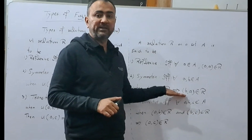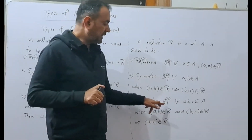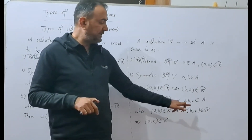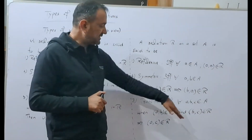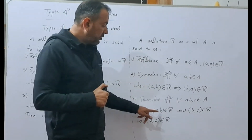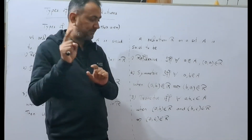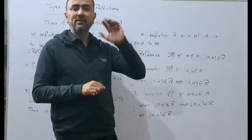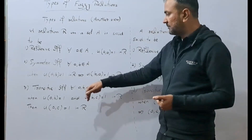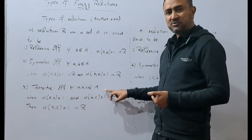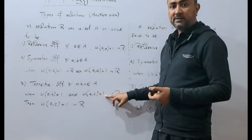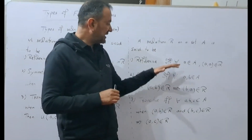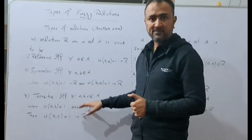A relation R on a set A is transitive if and only if for all a, b, c ∈ A, whenever (a, b) ∈ R and (b, c) ∈ R, then (a, c) ∈ R. In membership function terms: μ(a, b) = 1 and μ(b, c) = 1 implies μ(a, c) = 1. We translate transitivity as: whenever μ(a, b) = 1 and μ(b, c) = 1 in R, then μ(a, c) = 1 in R. This completes the translation of all three definitions.